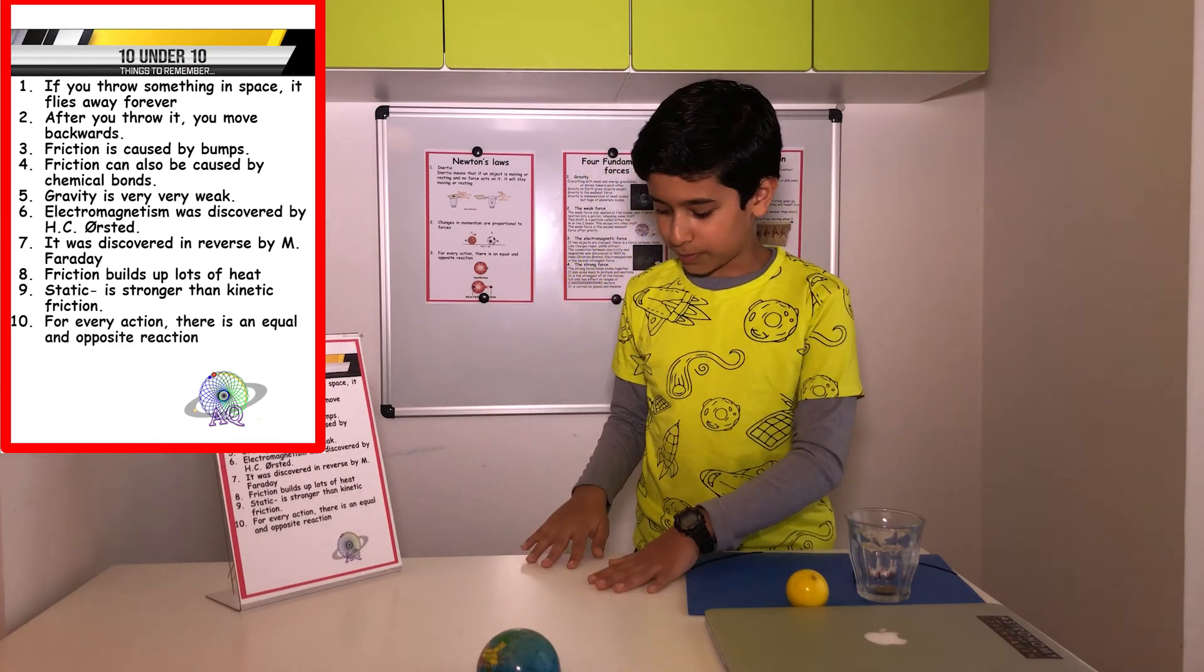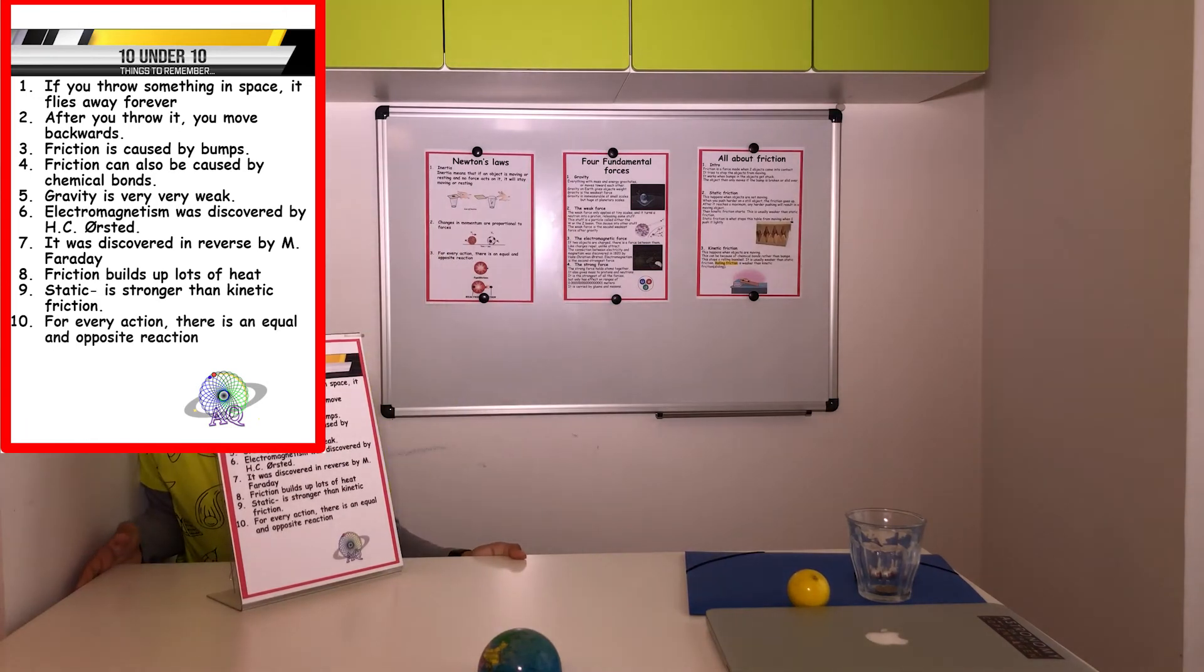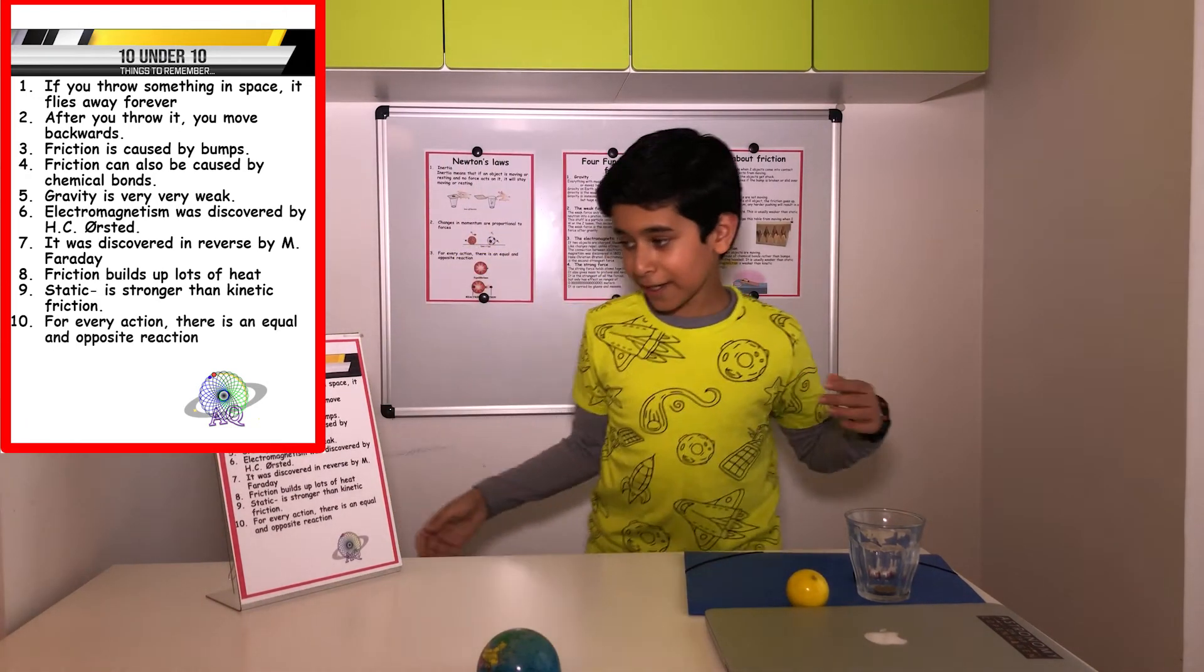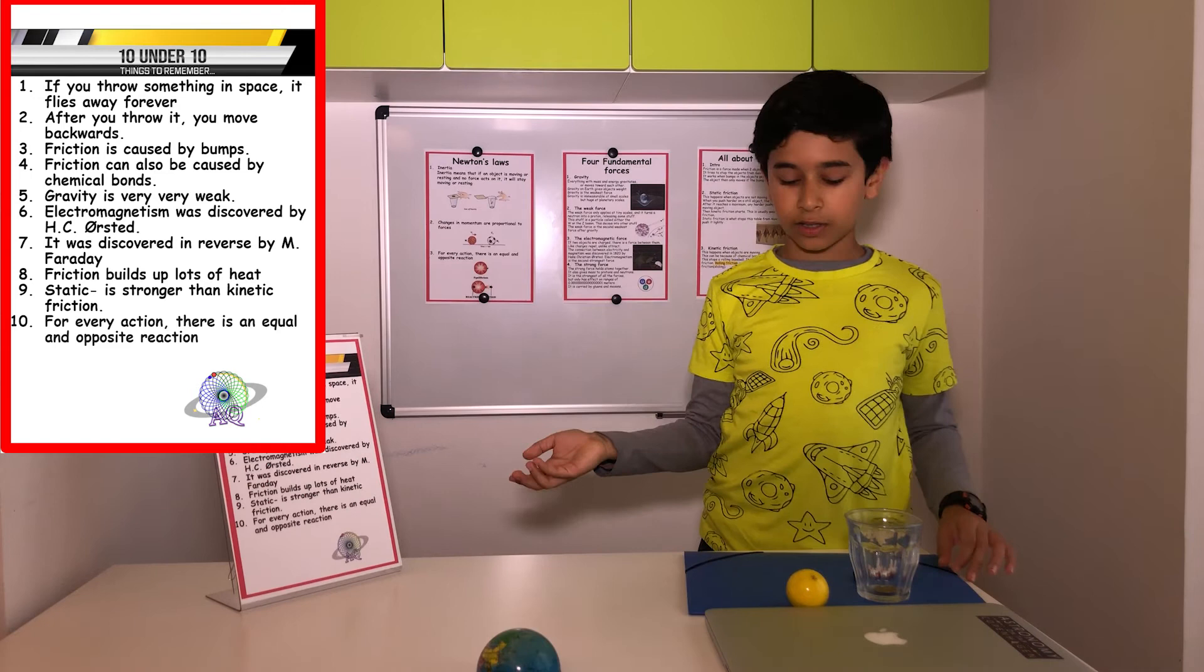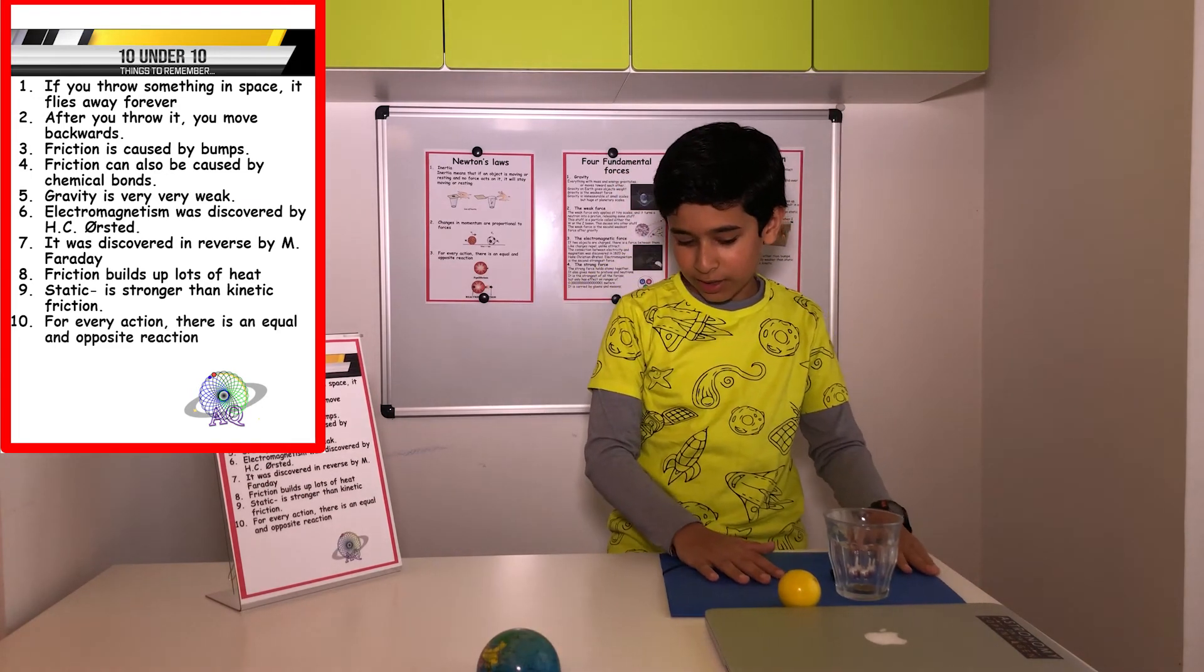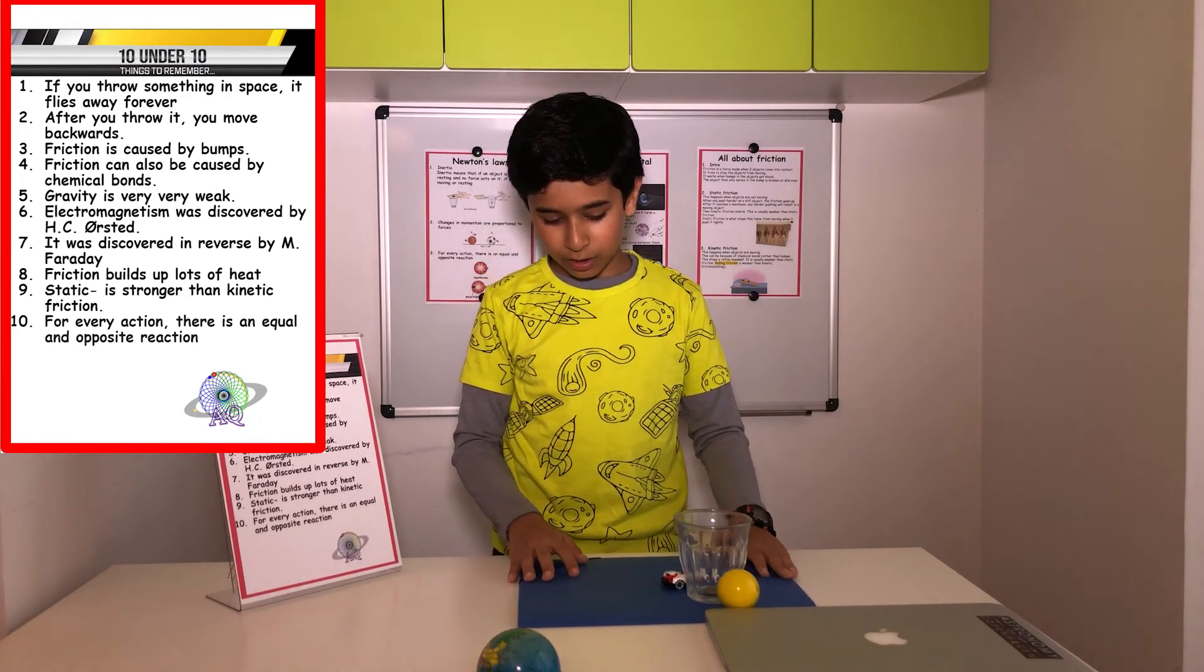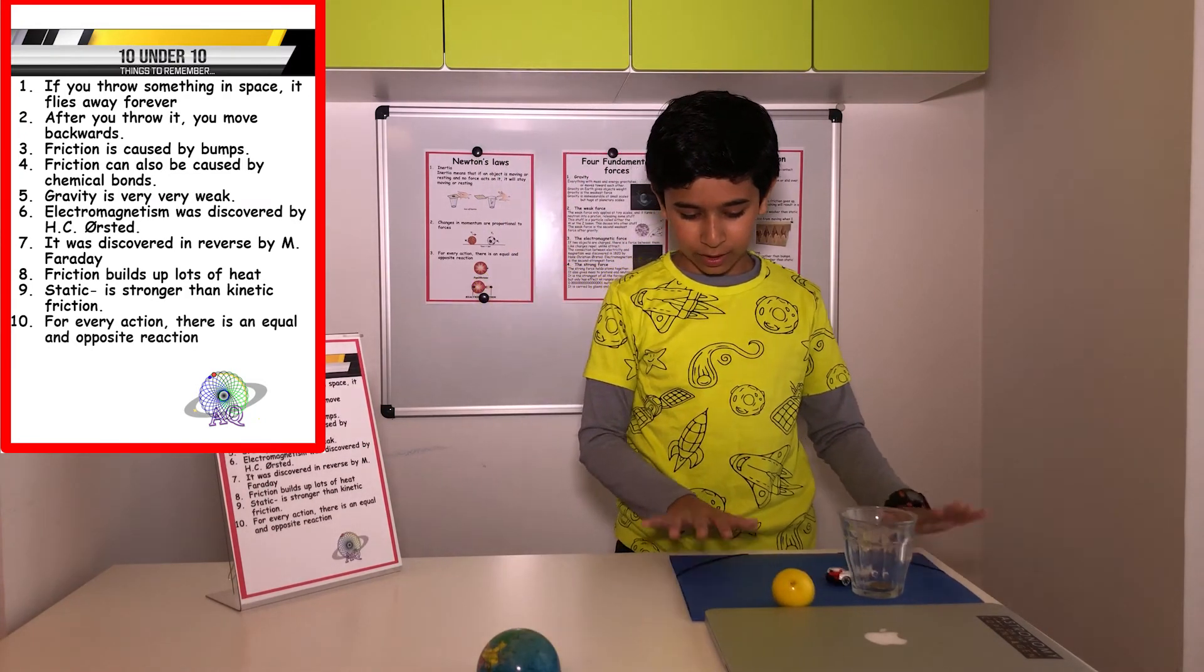Friction. Static friction is caused by bumps. That's why this table is not moving when I push. Friction can also be caused by chemical bonds when something is moving. Right now there are chemical bonds forming between this and the table. And that's why it stops when I let go.